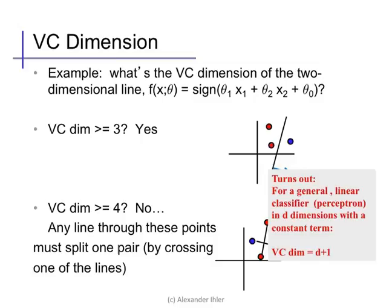It turns out that, for the perceptron, we can make a very general statement. In d dimensions, with a constant term, the VC dimension is exactly d plus one. Note that this is easy to remember because this is also the number of parameters of the model. One for the constant plus d for each of the features. And, as we know, adding more parameters tends to make a more complex classifier.